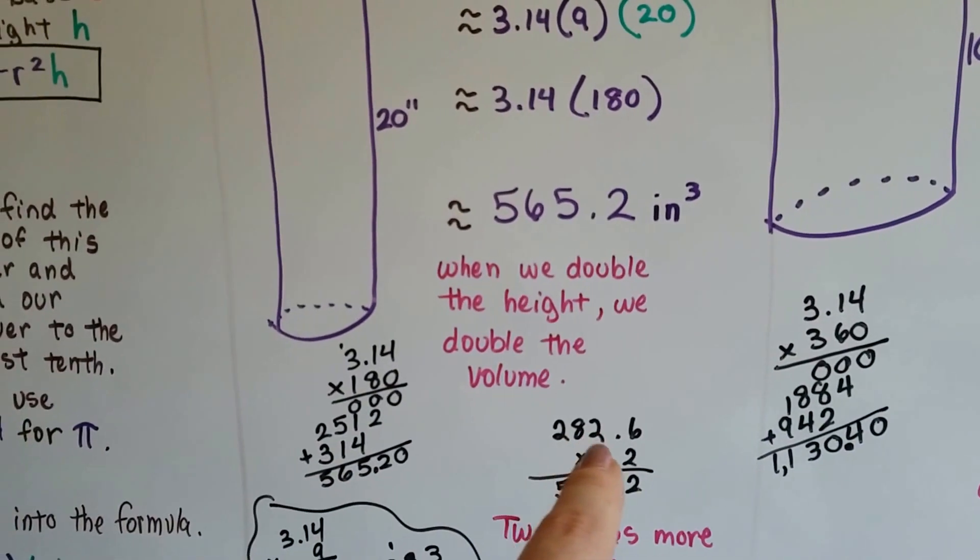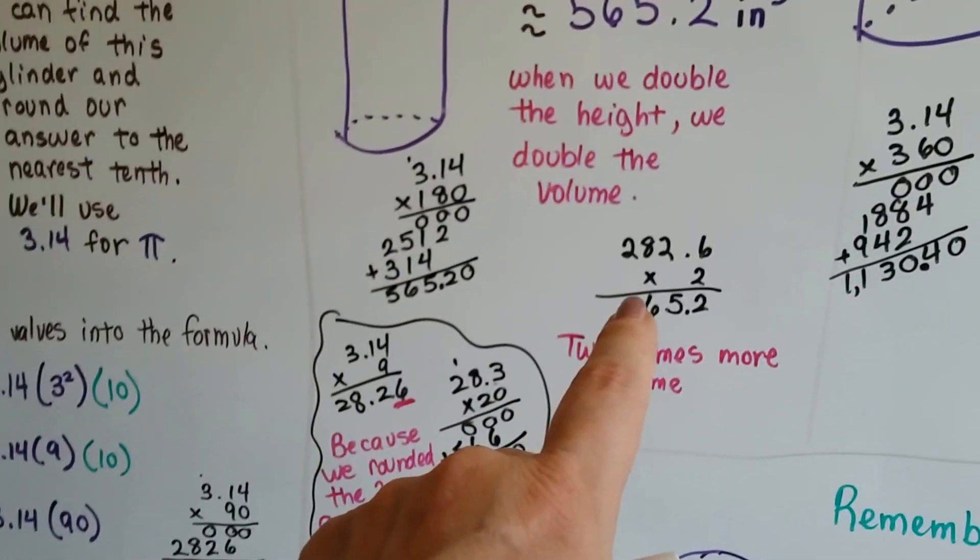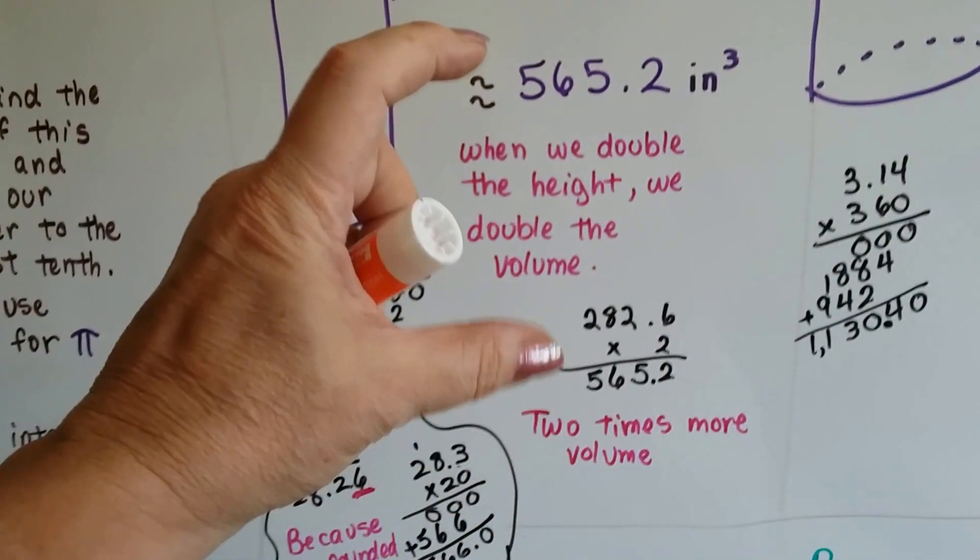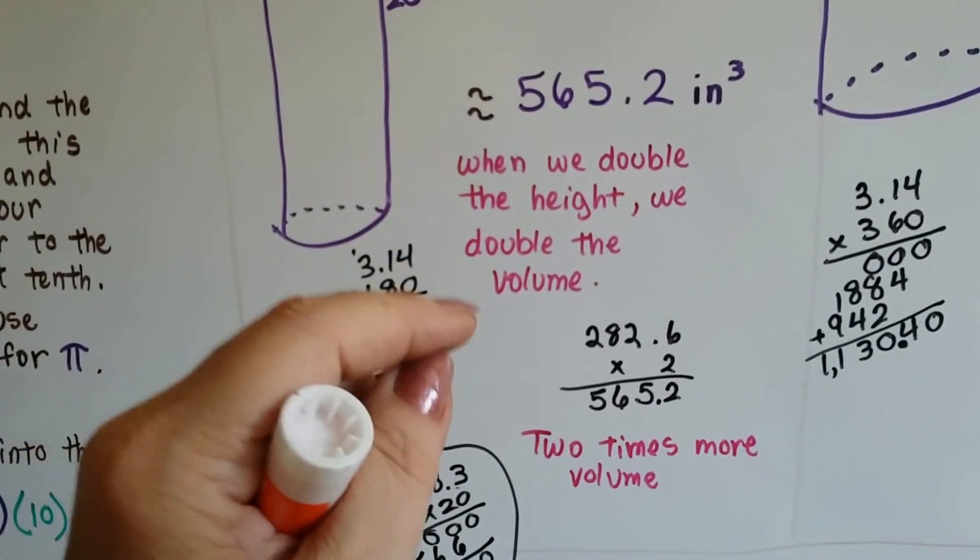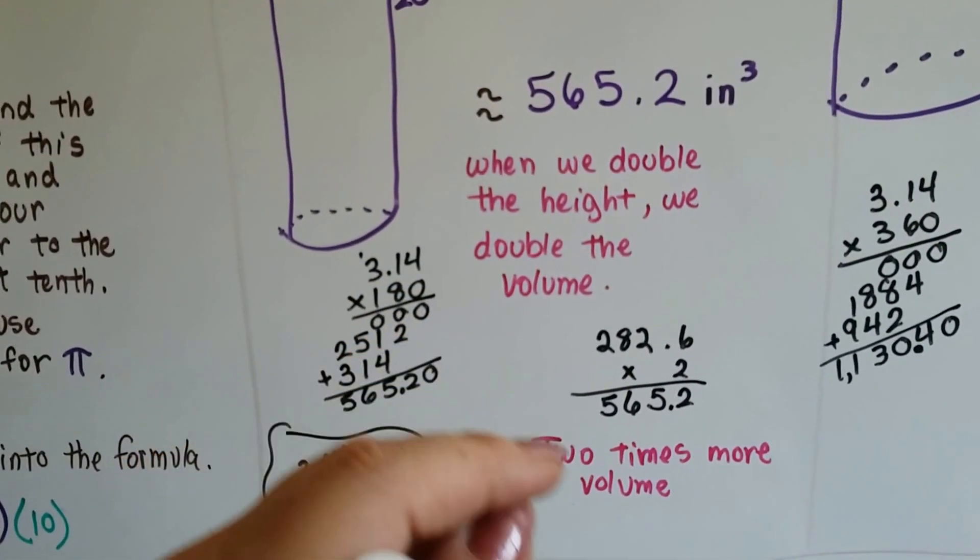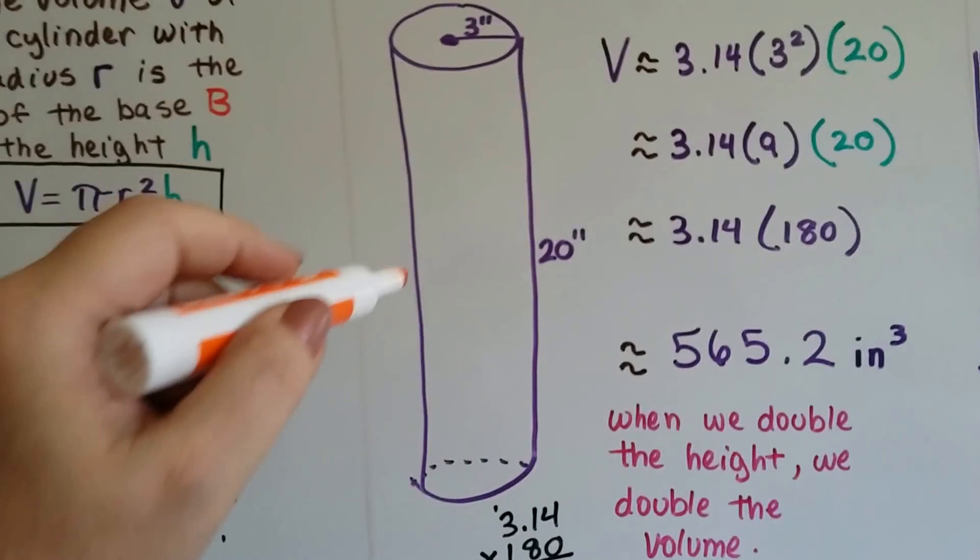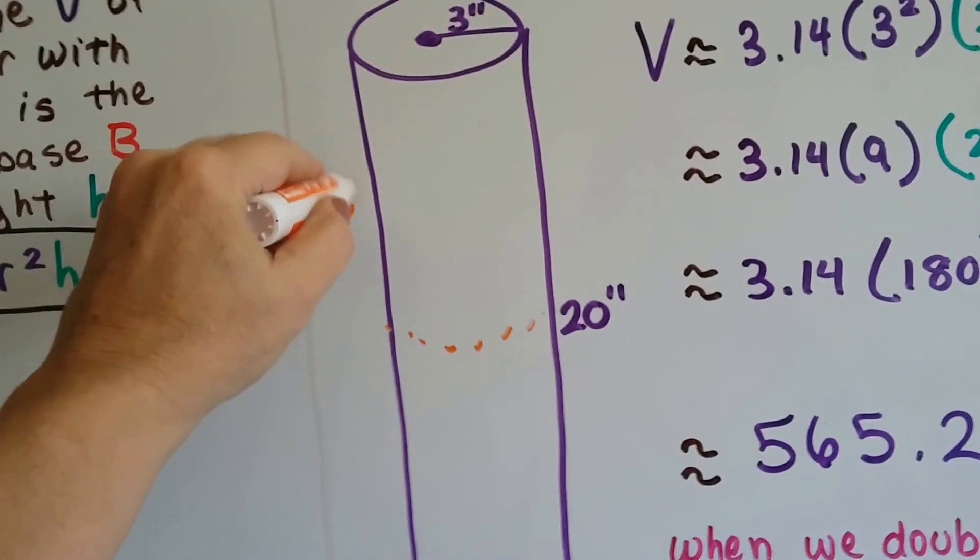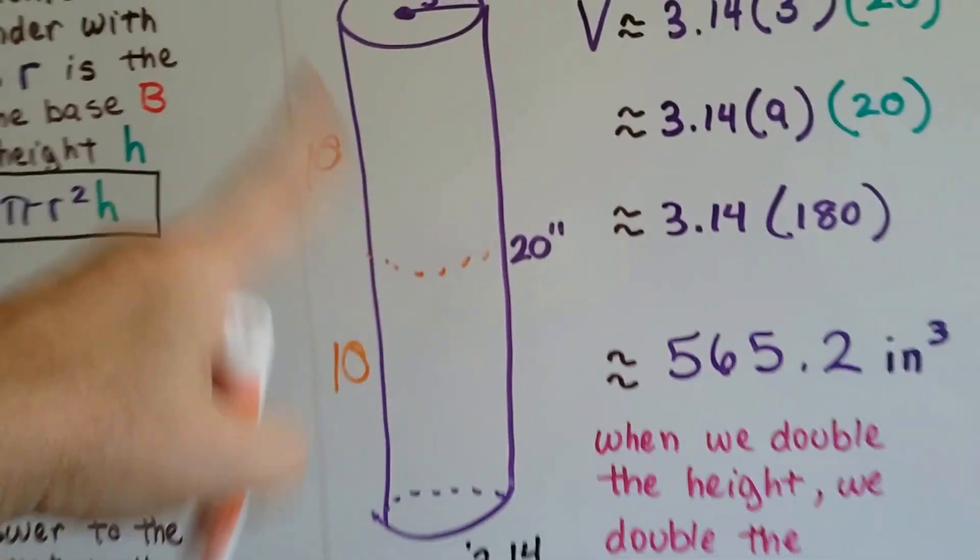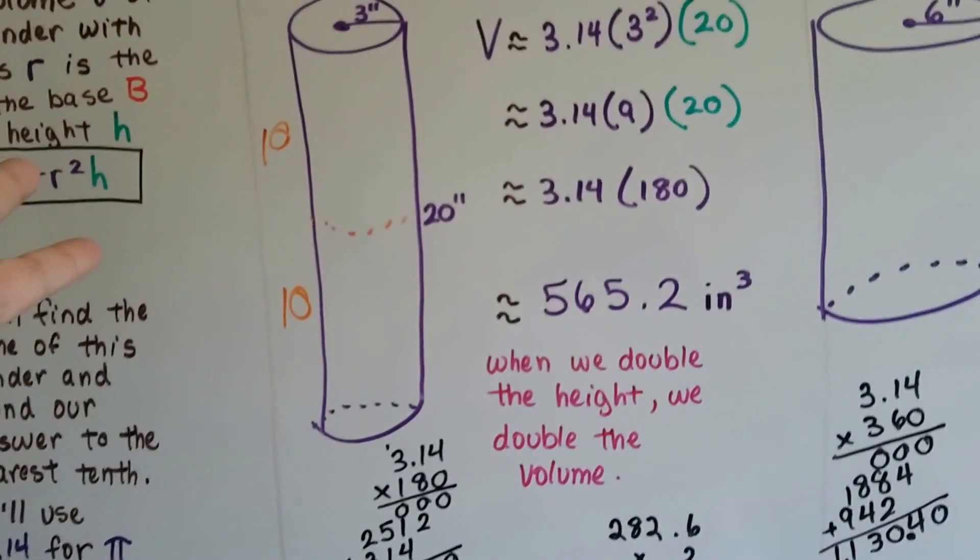What happened? Well, 282.6, our previous answer down here. If we multiply it by 2, we get 565.2. So when we doubled the height, we doubled the volume. It's 2 times more volume. So if you look at this, basically all we did was we stacked a 10 inch one and a 10 inch one. So we just doubled it.